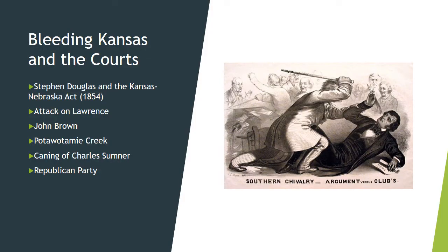In 1854, Stephen Douglas, a Democratic Senator from Illinois, promoted the Kansas-Nebraska Act, a new piece of legislation designed to deal with the territories of Kansas and Nebraska coming into the Union. The Kansas-Nebraska Act allowed settlers in those two territories to exercise popular sovereignty — that is, to decide whether they would become free or slave states. The act inspired a series of violent confrontations between pro-slavery and anti-slavery forces as advocates of each flocked into the territories simply to establish residency so that they could vote.